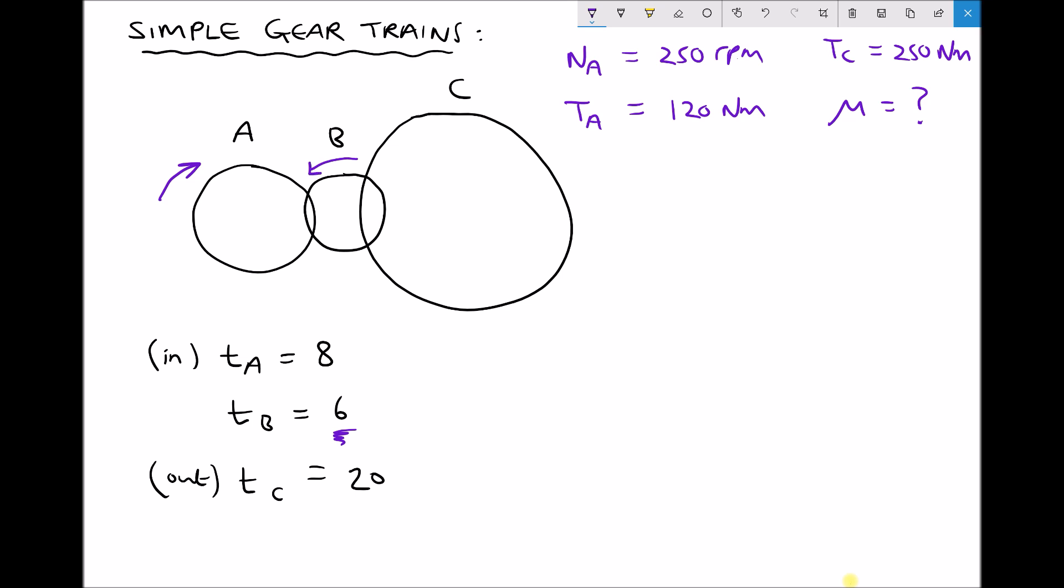But if gear B turns anticlockwise, then gear C turns clockwise, the same as our input. So the purpose of our idler gear is to change the direction of rotation.